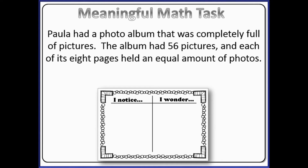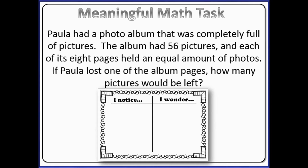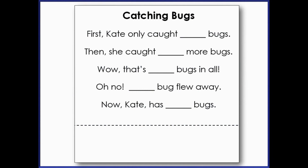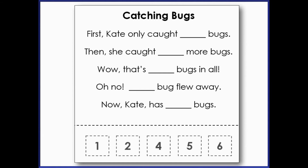Students would share out their I noticed and I wonder statements, predict the hidden question, then the teacher would reveal it and students would solve. The purpose of the next activity is for students to make sense of problem situations, make judgments about the reasonableness of numbers, and to view guess and check as a legitimate problem-solving strategy. The teacher shows a word problem that includes a sentence at the end telling the answer, but all numbers are covered up. Students brainstorm reasonable numbers to insert, then are given the actual numbers to place using guess and check.